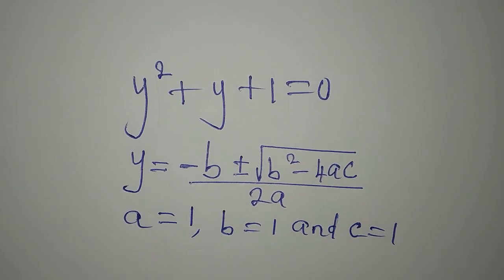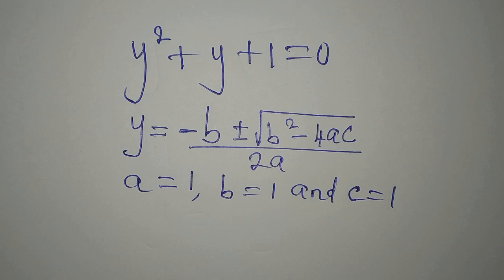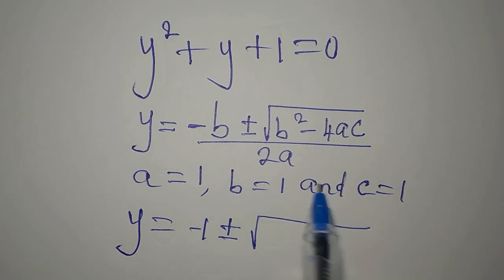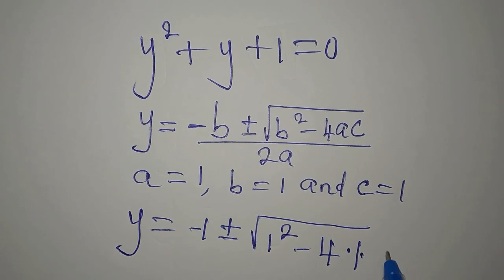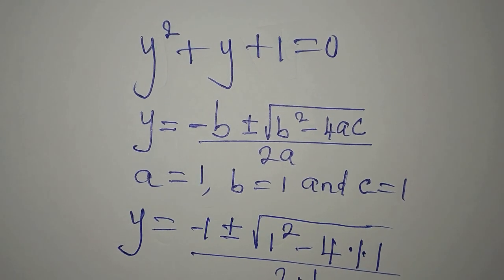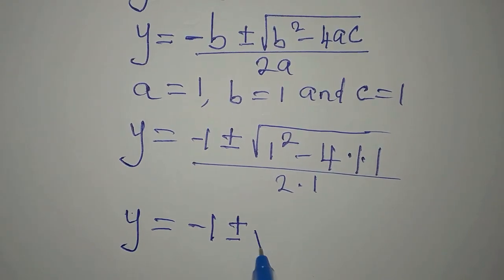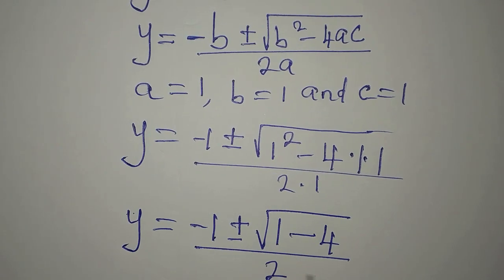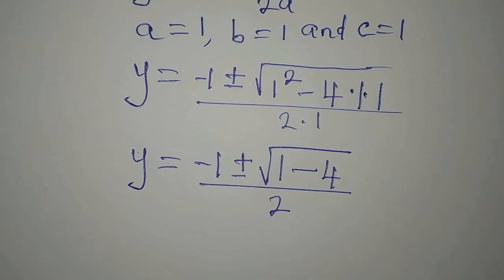A is the coefficient of y squared, b is the coefficient of y, and c is the constant. Substituting into the formula: y equals minus 1 plus or minus the square root of 1 squared minus 4 times 1 times 1, divided by 2 times 1. That gives minus 1 plus or minus the square root of 1 minus 4, all divided by 2. Now, you might be tempted to find the square root of 1 and the square root of 4 separately, but that would not be correct.